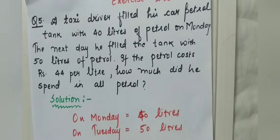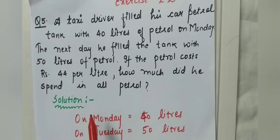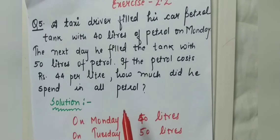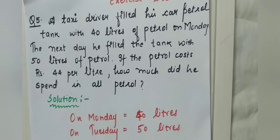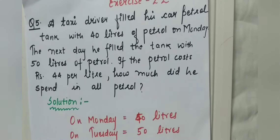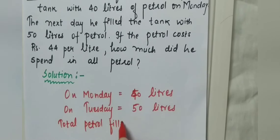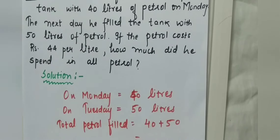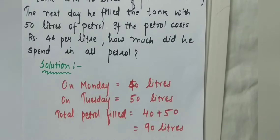Now we have already been given the cost of 1 litre petrol. We have to find out how much total money he spent on petrol. First we'll find out how much petrol he filled in total. Total petrol filled is 40 plus 50, which equals 90 litres. So total petrol he filled is 90 litres.